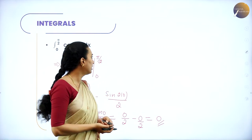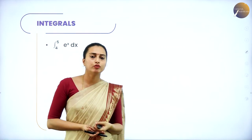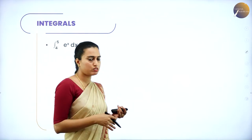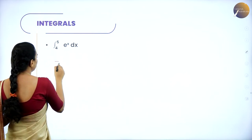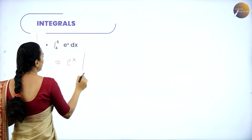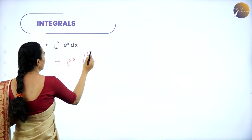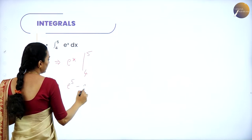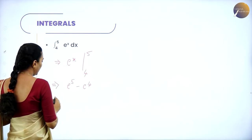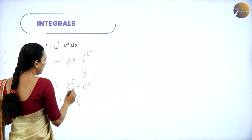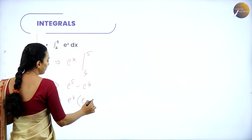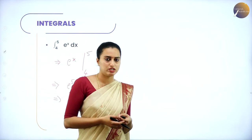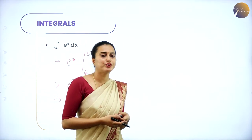The next problem is: integral from 4 to 5 of eˣ dx. The integral of eˣ is eˣ itself. So we have eˣ from limit 4 to 5, giving e⁵ - e⁴. Taking e⁴ as a common factor, the answer is e⁴(e - 1). This is the final answer.